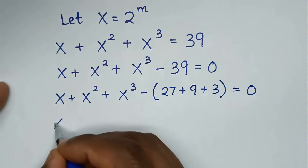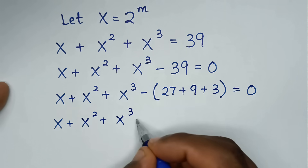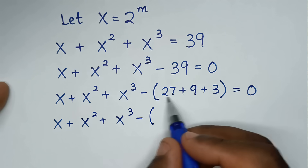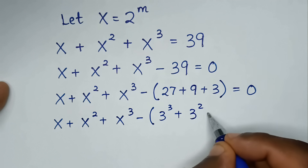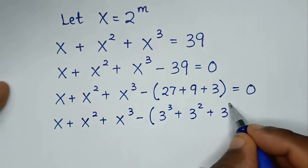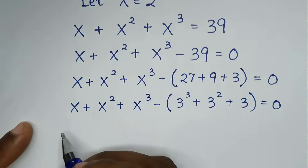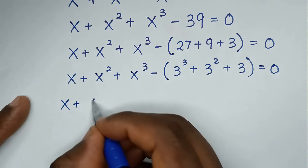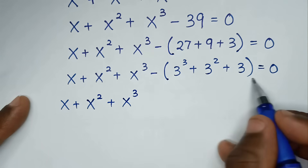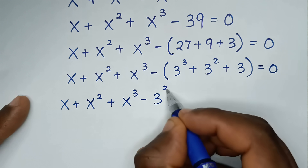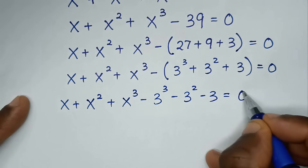Then it will be x plus x power of 3 minus — expressed in exponents — 27 is 3 power of 3, plus 9 is 3 power of 2, plus 3, is equal to 0. Then it will be x plus x power of 3 minus 3 power of 3 minus 3 power of 2 minus 3, is equal to 0.